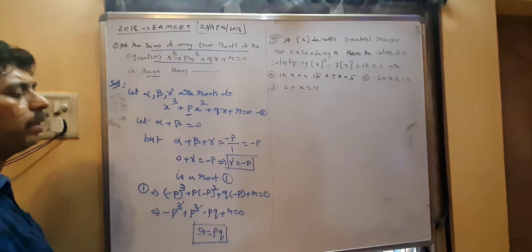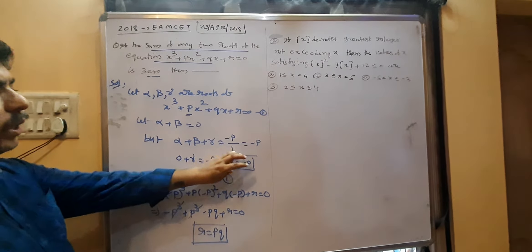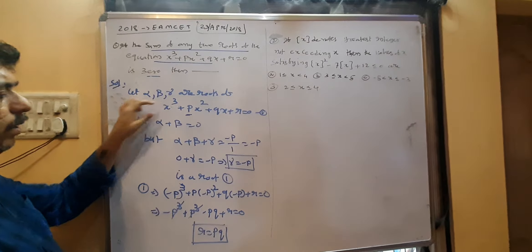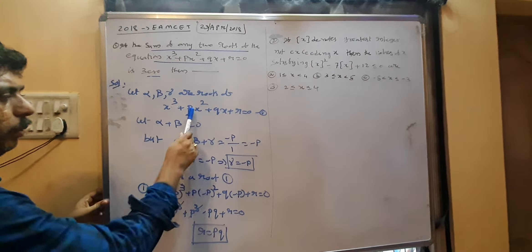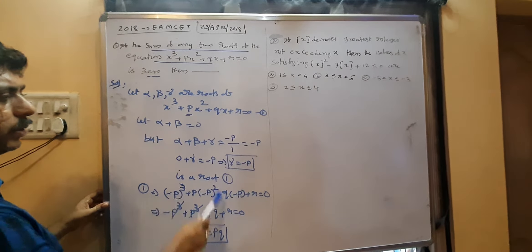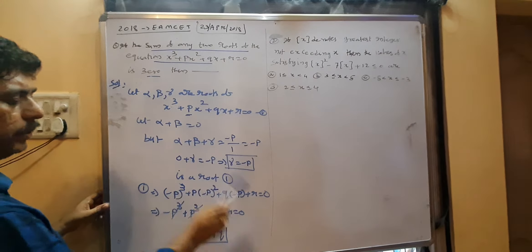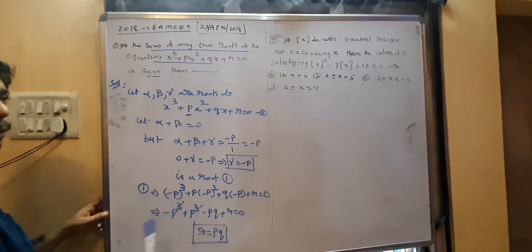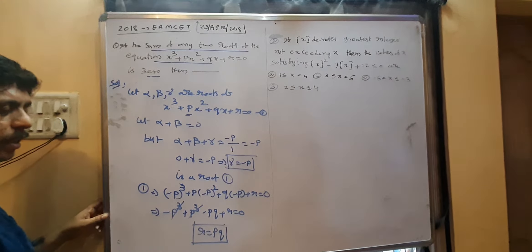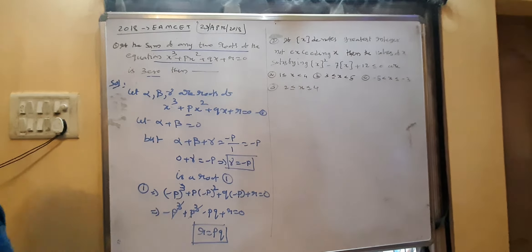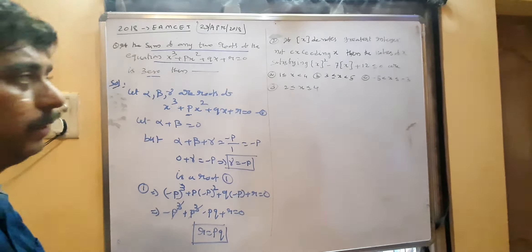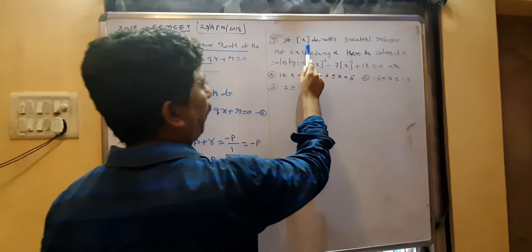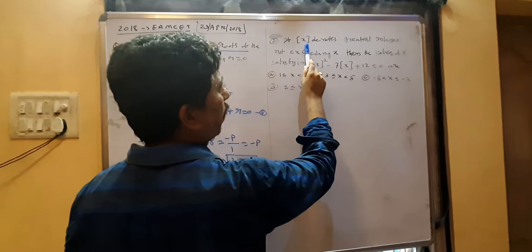This root we can substitute in the equation: (−p)³ + p(−p)² + q(−p) + r = 0. Simplifying: minus p cube plus p cube cancel, and we get r equal to p cube. Coming to the next question.